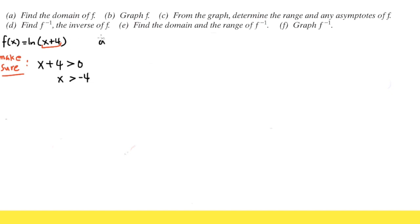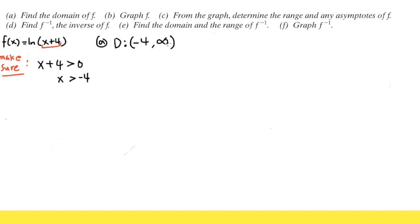So for part A, the domain — we use capital D for that — is telling us we have to have negative 4 and bigger. So we will have negative 4 to positive infinity. For negative 4, we are not including it, so we use parentheses. And for infinity, parentheses as well, because we cannot include infinity.